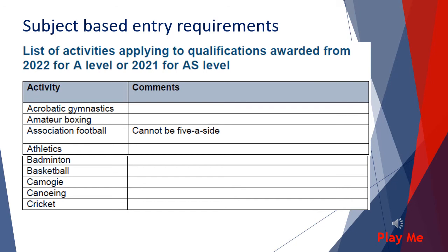Let's look at the list of activities you can study for your practical element of the course. Your practical is worth 15%, split as 15 marks each across attacking, defensive, and strategies and tactics, totalling 45 marks. If you're an athlete, swimmer or dancer, where attacking and defensive principles don't apply, you'll be assessed in one event and then a second event. All details are outlined in the full AQA PE specification, and I'd encourage you to check what you'll be assessed in for your sport before making your final decision on selecting this course.